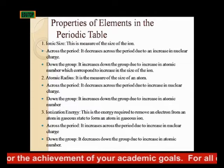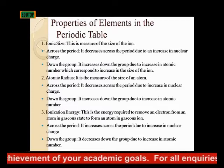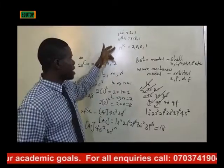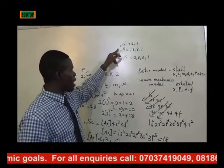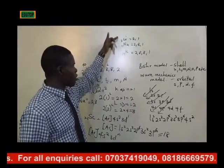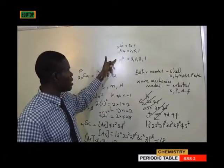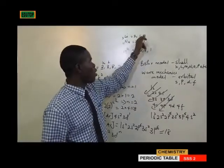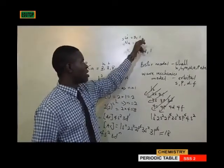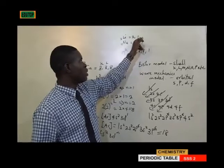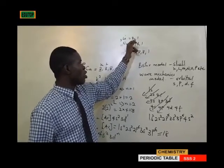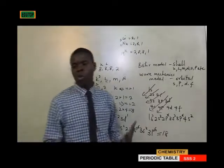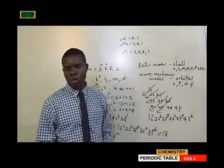Down the group, as you move down, there is an increase in atomic number — you can see 3, 11, 19. As atomic number increases, the size of the atom increases because the distance between the valence electron and the nucleus becomes wider. So atomic radius increases down the group.